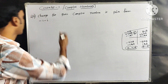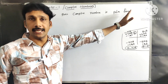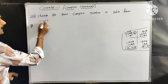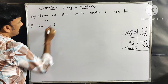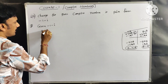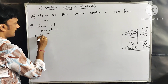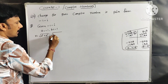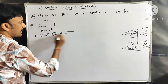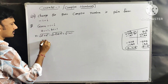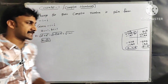Next problem: change the given complex number in polar form. The complex number is −1 − i. So a = −1, b = −1. R = √(a² + b²) = √((−1)² + (−1)²) = √(1 + 1) = √2.